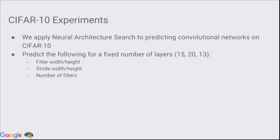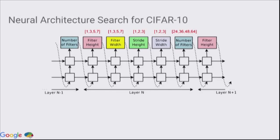The first experiment we conducted was on optimizing convolutional nets for CIFAR-10. We have to predict the filter width, filter height, stride width, stride height, and number of filters per layer. For example, filter height, we can select, the softmax can select between 1, 3, 5, 7. And then filter width, the softmax can select between 1, 3, 5, 7, and stride height, stride width, et cetera.